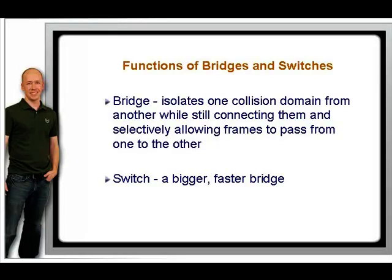In the early implementations of Ethernet, every device connected to a single wire. Thicknet 10Base-5 and Thinnet 10Base-2 were the most common physical layer implementations. A little later, hubs were used. All these technologies did effectively the same thing: connect many hosts together so that one of them at a time could transmit on the wire.